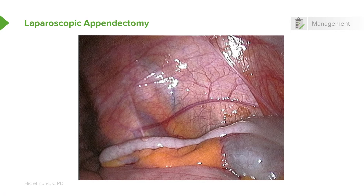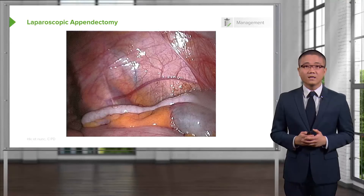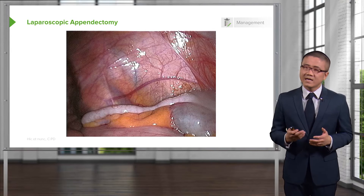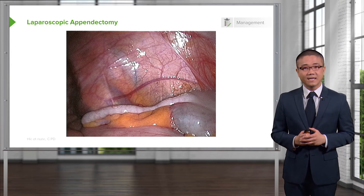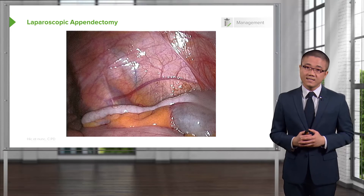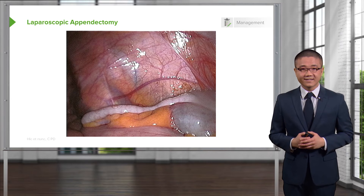This is a high-definition image of a laparoscopic appendectomy. Through this trocar, we are looking at the right lower quadrant of the abdomen. In the lower third of the screen, you'll notice the appendix lying horizontally. Laparoscopic appendectomy is now standard of care. We divide the appendix using a linear titanium stapler, detaching it from the cecum and taking its blood supply — called the mesoappendix.